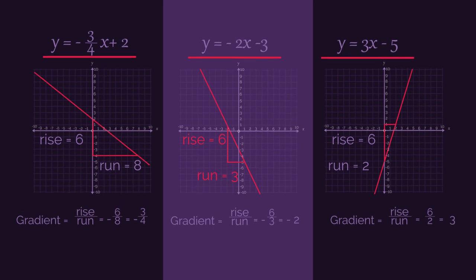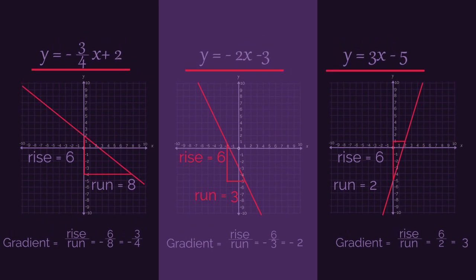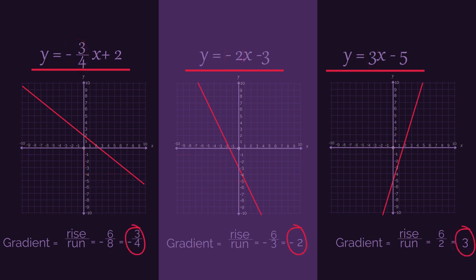So did you see that the number in front of the x is the gradient? So negative three quarters, negative two and three. And the number on its own is where the line crosses the y-axis. We call this the y-intercept. It's where the line intercepts the y-axis.